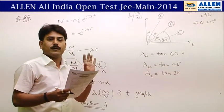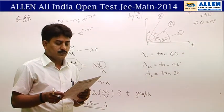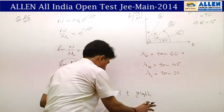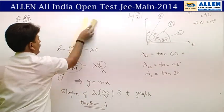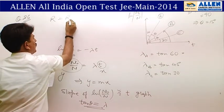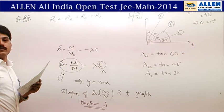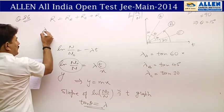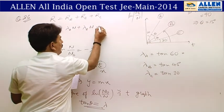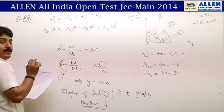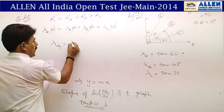Now read the question further: if a radioactive material undergoes all three decays simultaneously, the total rate of decay R = R_A + R_B + R_C. So λ_eq × N = λ_A × N + λ_B × N + λ_C × N. The N cancels out, giving λ_equivalent = λ_A + λ_B + λ_C.